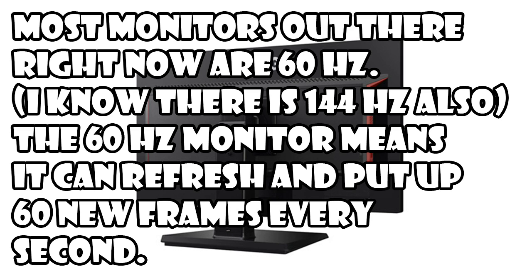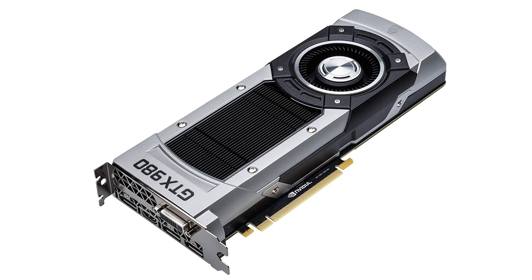To simplify, let's take a look at an example. Most monitors out there right now are 60 hertz, meaning the monitor can refresh and put up 60 frames every second. So the problem is when your GPU is powerful enough to produce more than 60 frames per second on average, then there is a possibility of screen tearing as your monitor can put up only 60 frames every second.